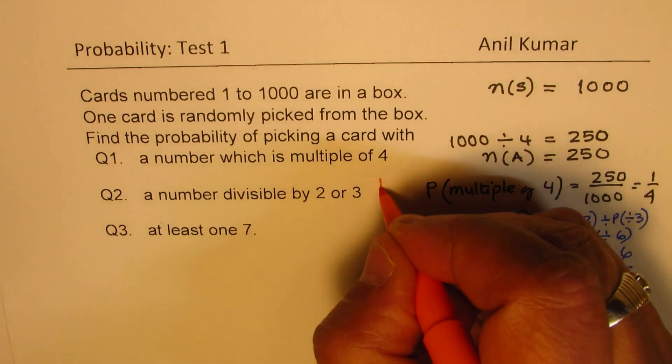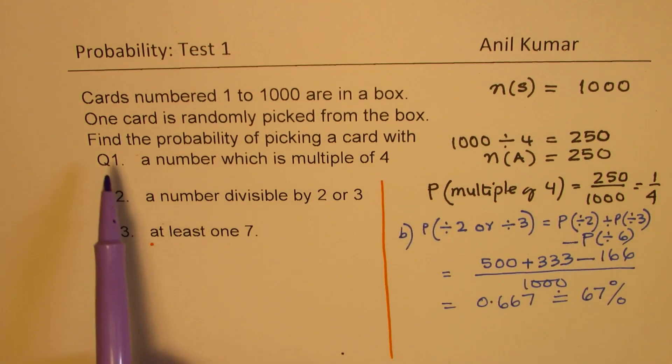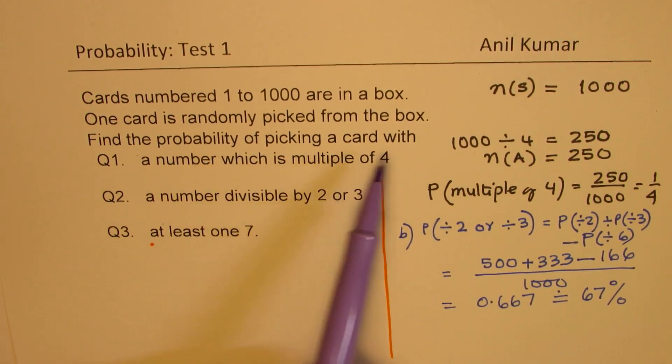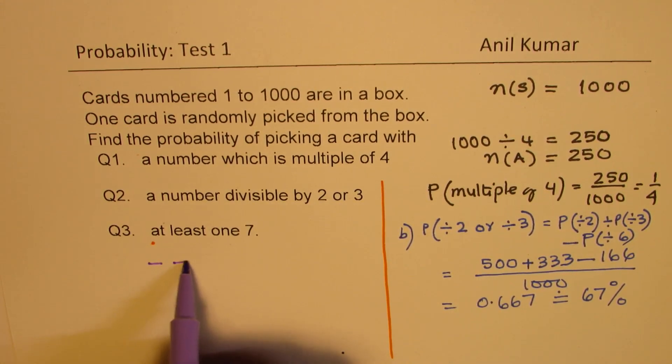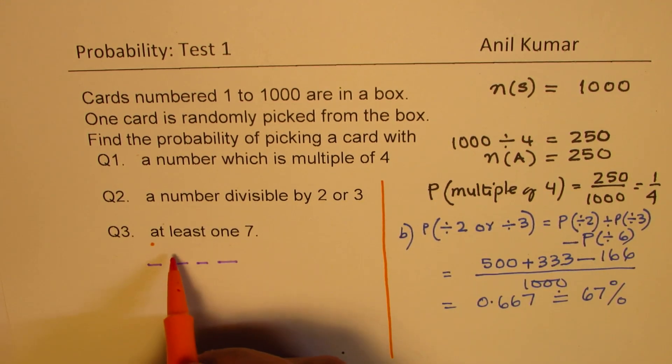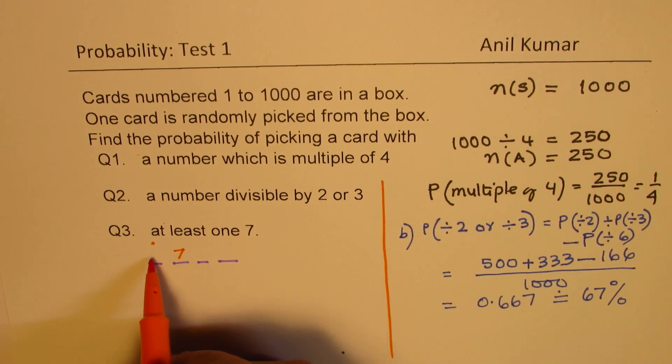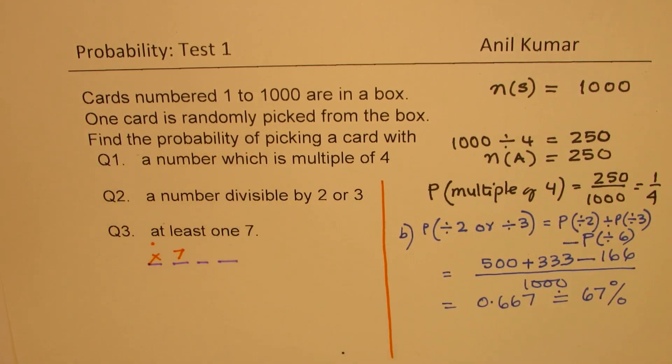Now, let's answer the last question, which is kind of tricky, which is find probability of picking a card with at least one 7. The numbers are from 1 to 1000. So we have four places to work with. Now, 7 could be in the first position. It cannot be here—you cannot start with 7 in the thousands place for 1000. So we cannot place 7 here. You cannot start with 7.